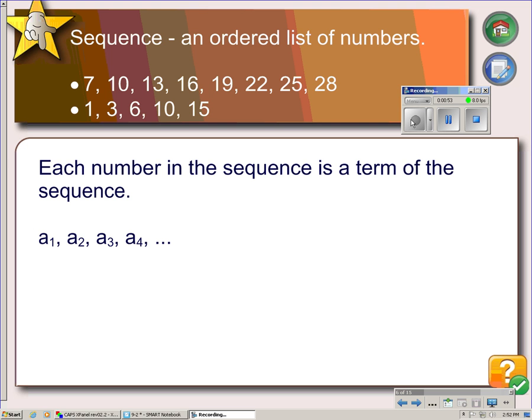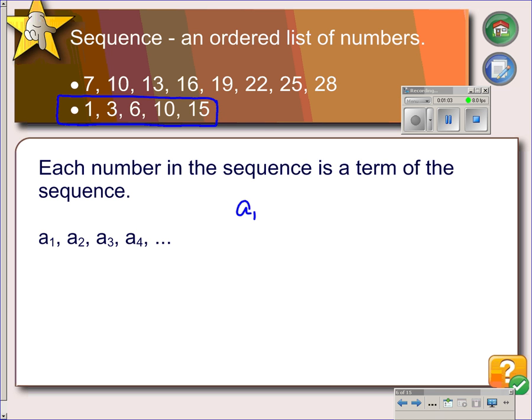Each number in the sequence is called a term. So if we look at this bottom list of numbers, we have five terms here. The first term would be a sub 1. That represents the first term, and our first term is 1. The second term is 3. The third term is 6, etc. That's how you identify which term in the sequence you're talking about.